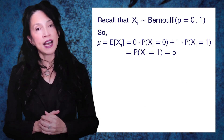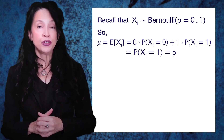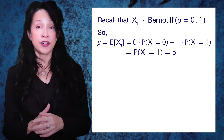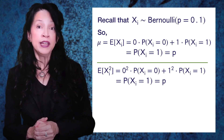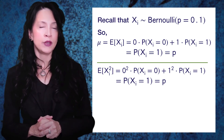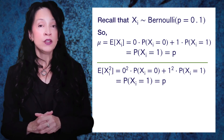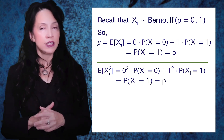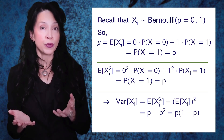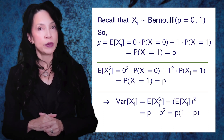Mu, the expected value of Xi, is going to be 0 times the probability that it is 0 plus 1 times the probability that it's 1, which reduces to just the probability that Xi equals 1, which is p — because Xi comes from this Bernoulli distribution. Towards the variance, I want to compute the expected value of Xi-squared, which is 0-squared times the probability that Xi equals 0 plus 1-squared times the probability that Xi equals 1 — and that gives us p again.